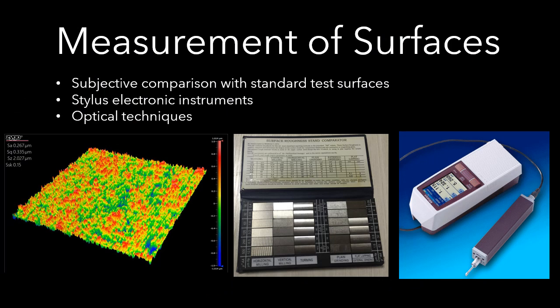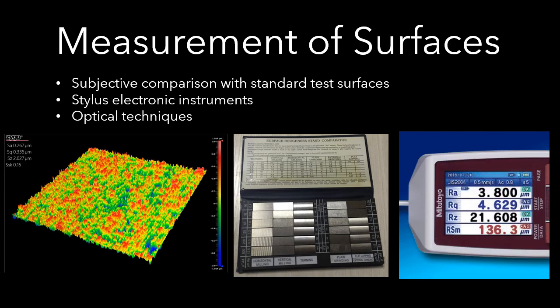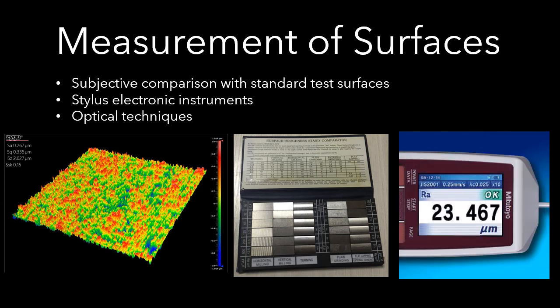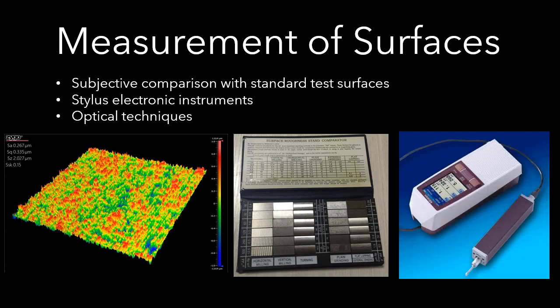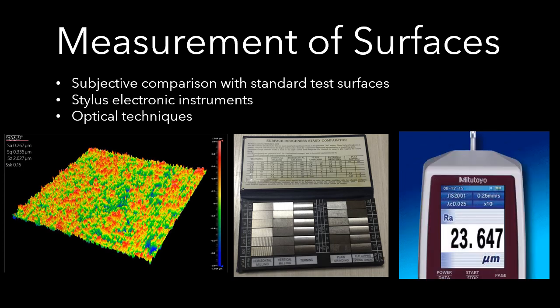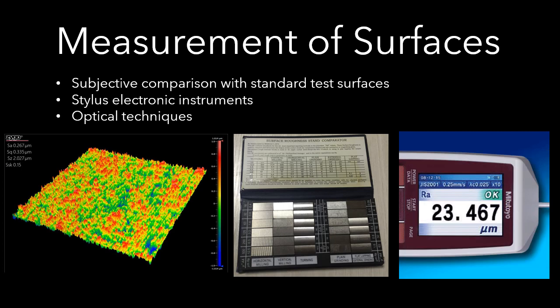For measurement of surfaces, we have two parameters of interest. First, surface texture, which is the geometry of the surface, commonly measured as surface roughness. Second, surface integrity, which deals with the material characteristics immediately beneath the surface and the changes that result from the processes that created it.